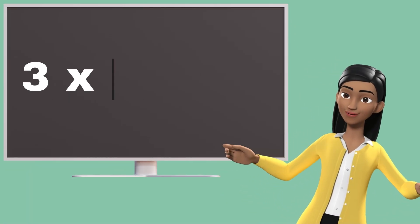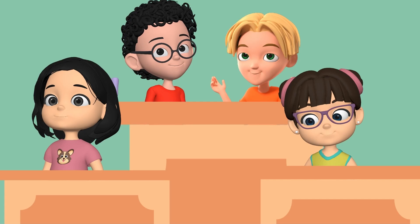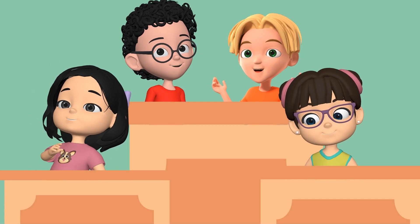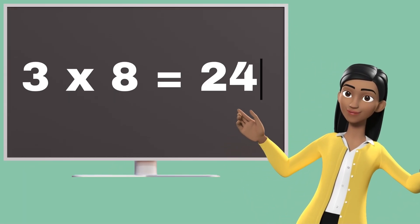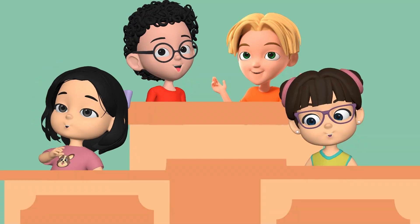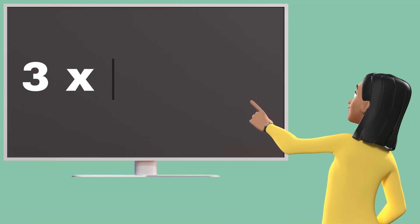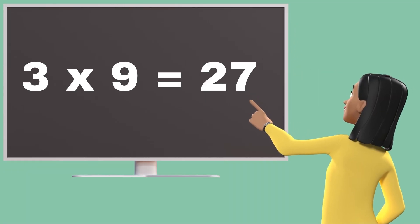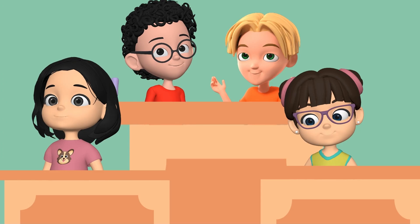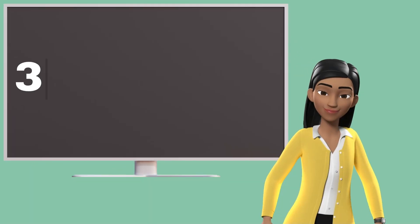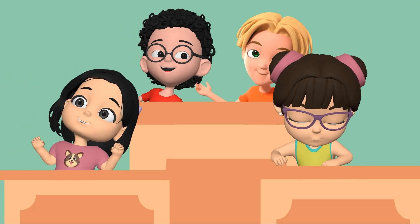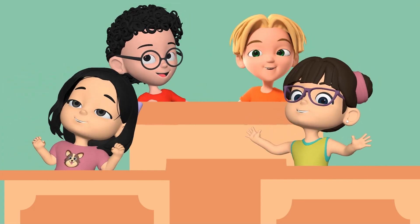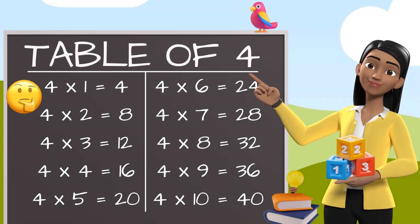Three sevens are twenty-one. Three sevens are twenty-one. Three eights are twenty-four. Three eights are twenty-four. Three nines are twenty-seven. Three nines are twenty-seven. Three tens are thirty. Three tens are thirty. Let's learn table of 4.